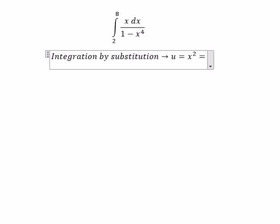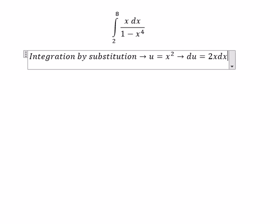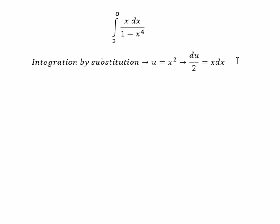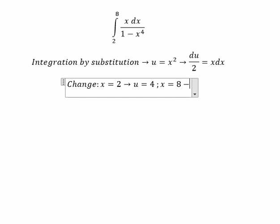You get du equals to 2x dx. Because we don't have the number 2 in here, we divide both sides by 2. Next we need to change the boundary. If x equals 2, then u should be 4. If x equals 8, then u should be 64.